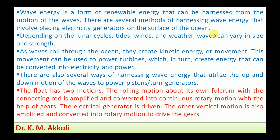Depending on lunar cycles, tides, winds, and weather, waves can vary in size and strength. The same wave heights and strengths are not continuously available — they vary with lunar cycles, which are the monthly rotations of the earth and moon. Tides are produced by winds, and season-wise variations — rainy, winter, and summer — also affect the size and strength of waves.